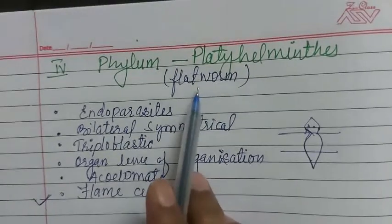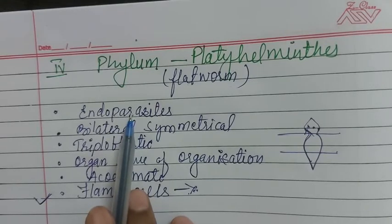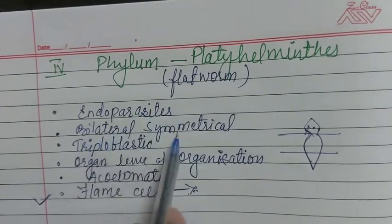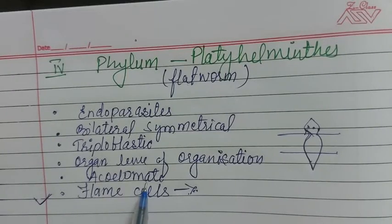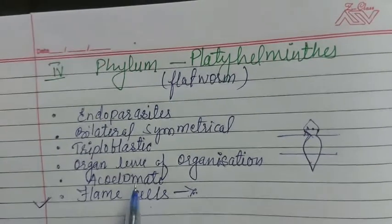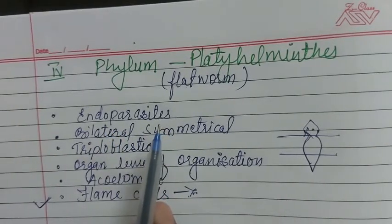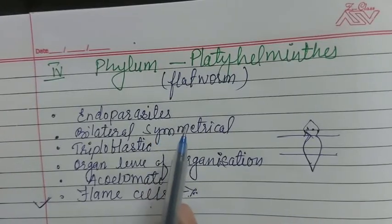Their bodies are dorsoventrally flattened, so they are known as flatworms. They are parasites — endoparasites — and mostly cause diseases in animals and human beings. On the basis of symmetry, they are bilaterally symmetrical and triploblastic. Organ level of organization is present, and coelom is absent so they are acoelomate. Flame cells are present for osmoregulation and excretion. Respiration is anaerobic because they are endoparasites. The respiratory system, circulatory system, and endoskeleton are all absent.